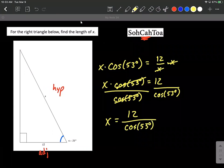We can get an approximation for this by putting this into our calculator. Make sure your calculator is in degree mode because it's 53 degrees. So 12 divided by cosine of 53, I got this to be 19.94 approximately.